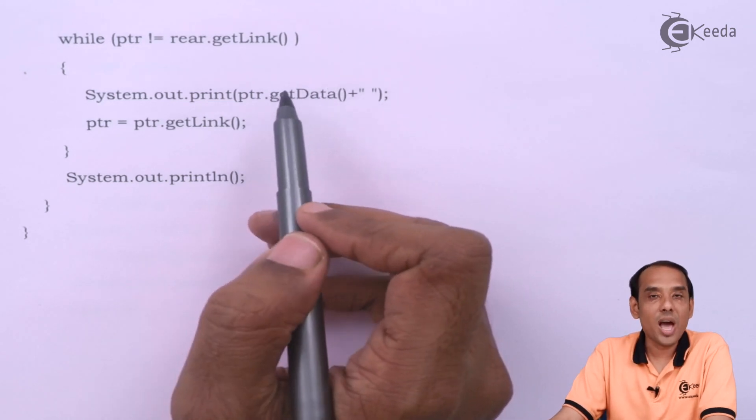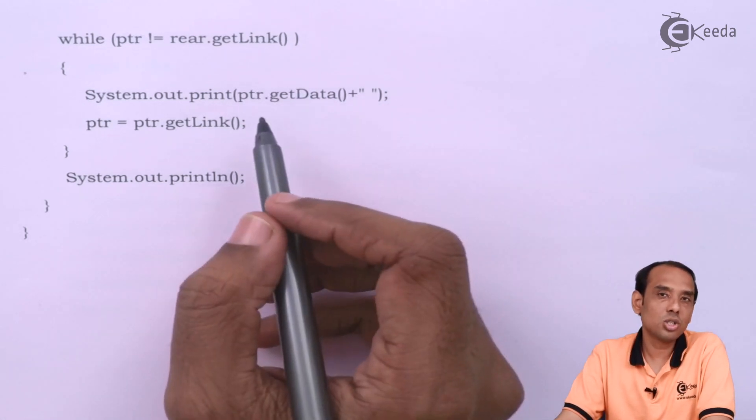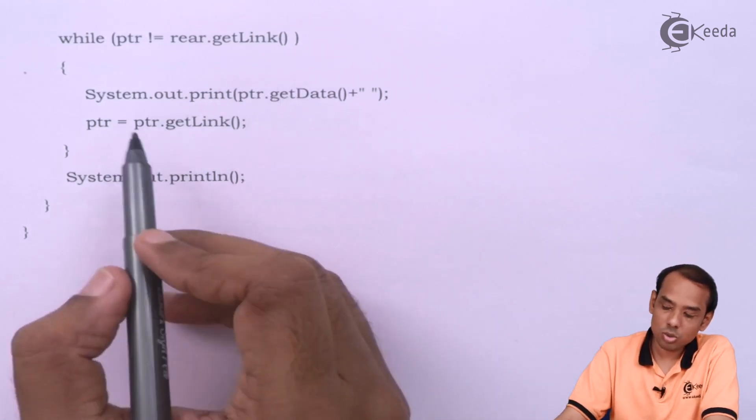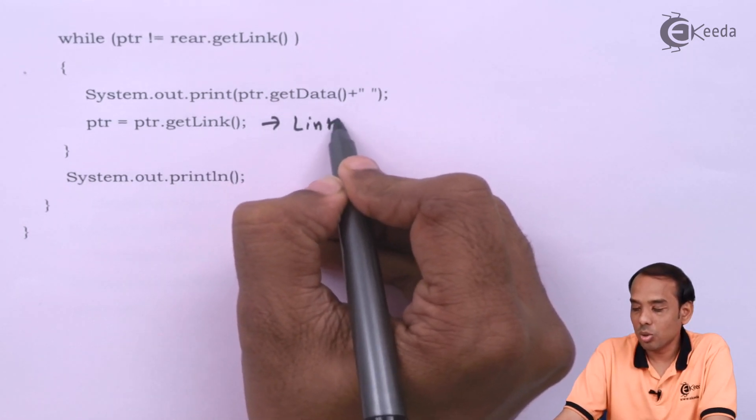So getData is going to give me the values present in the given queue. And then I just need to shift the value of ptr. So I am going to get ptr.getLink. So this will provide a link to the next node.